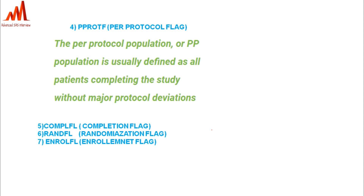The fifth flag is the Completion Flag, which includes subjects who completed the study through the end. The Randomization Flag (RANDFL) includes subjects who were assigned a randomization number. The Enrollment Flag (ENRLFL) includes subjects who provided informed consent and were enrolled into the study. These are all subject-level population flags.